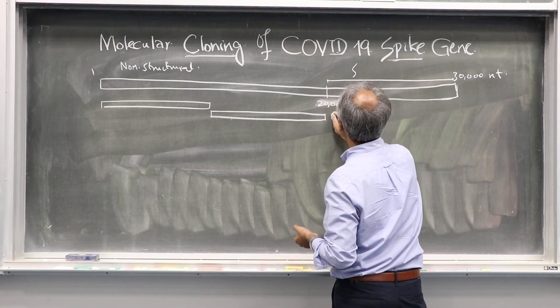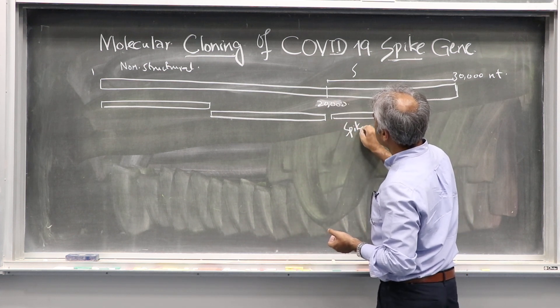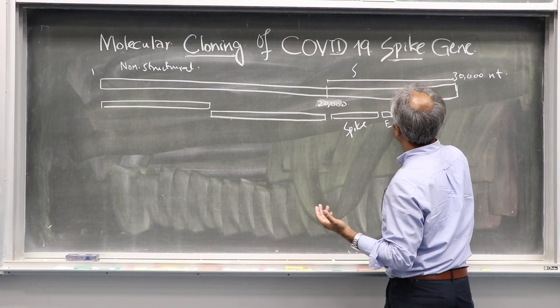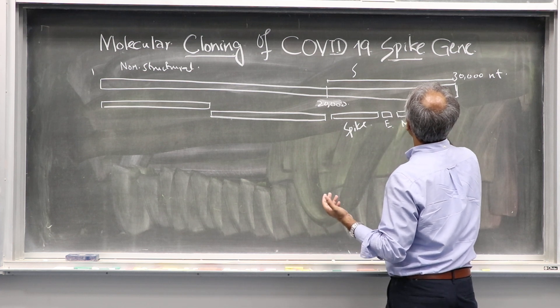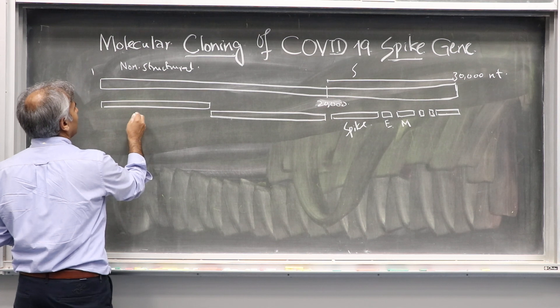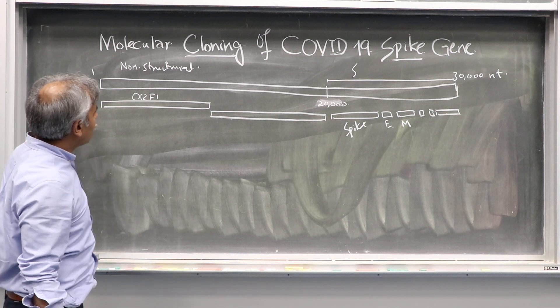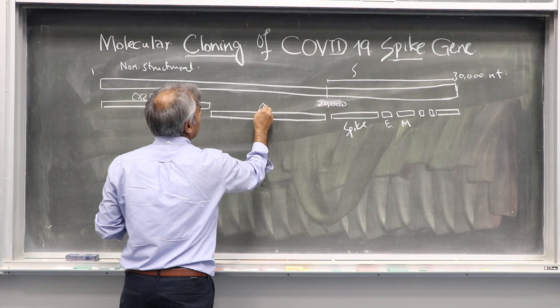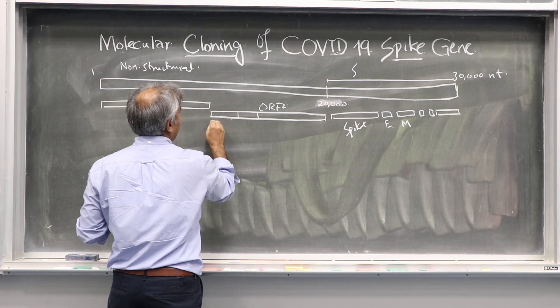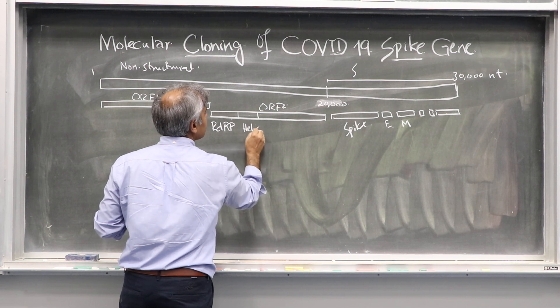There you have the spike gene here, then it is followed by the envelope, then the membrane, and then other structural genes. In the non-structural part, you have open reading frame 1, open reading frame 2, RNA-dependent RNA polymerase, and helicases. This is the genome.